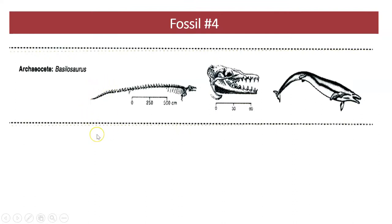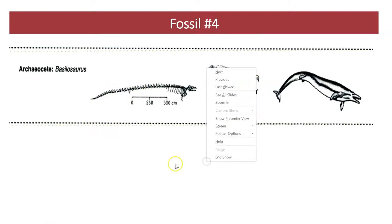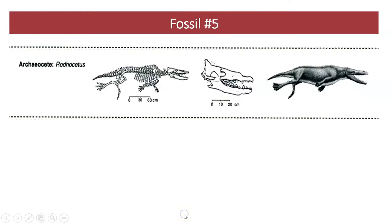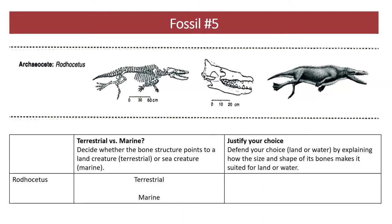Basilosaurus is fossil evidence number four. Examine the skeleton of Basilosaurus and the skull now, and make your observations. Rotocetus is fossil number five. Again, make your observations. Compare the size and the shape of the bones to some other ancestors that you've been observing. Do this now.